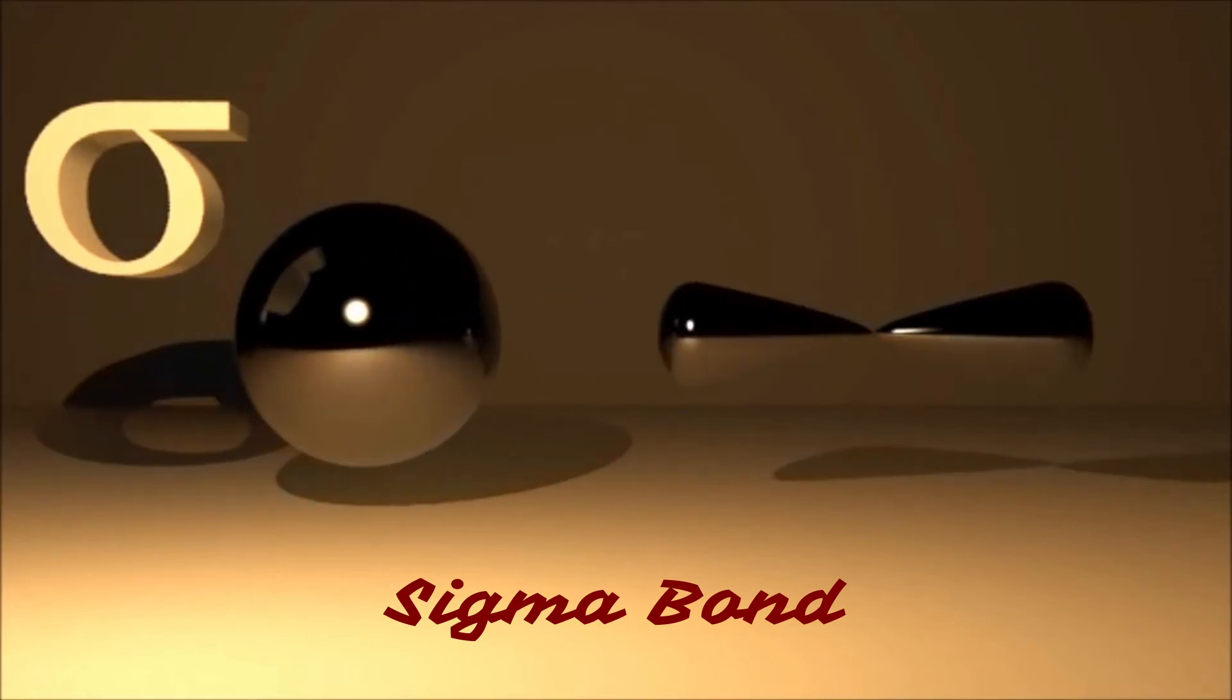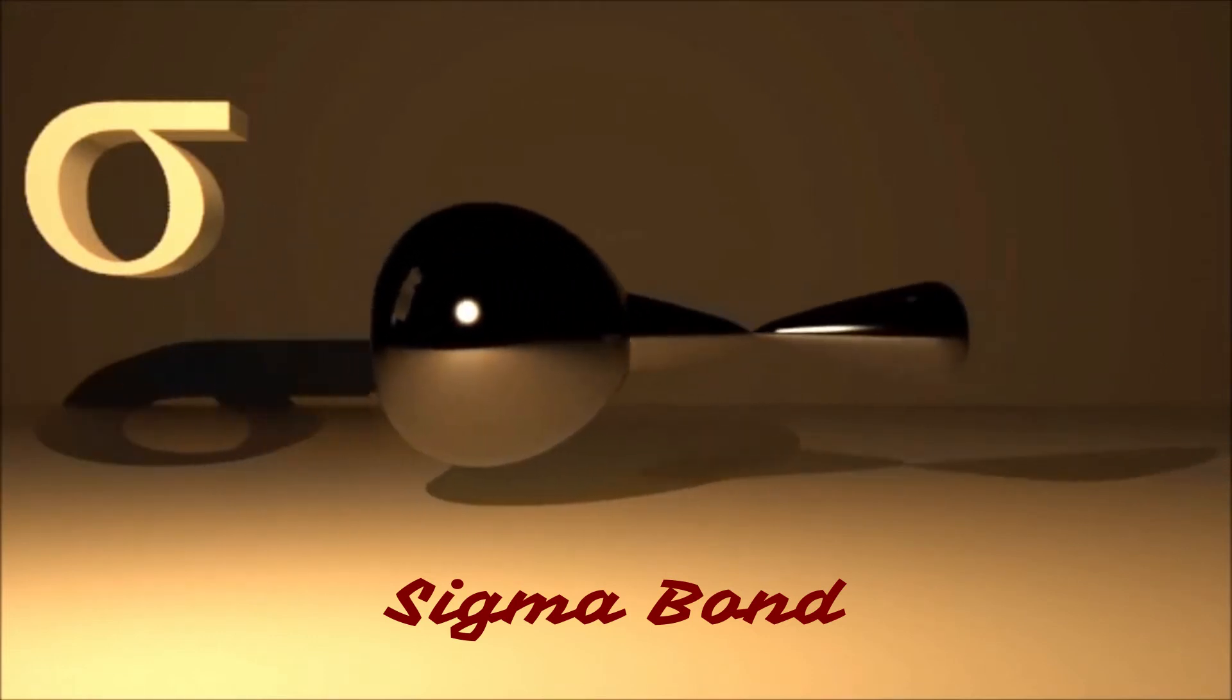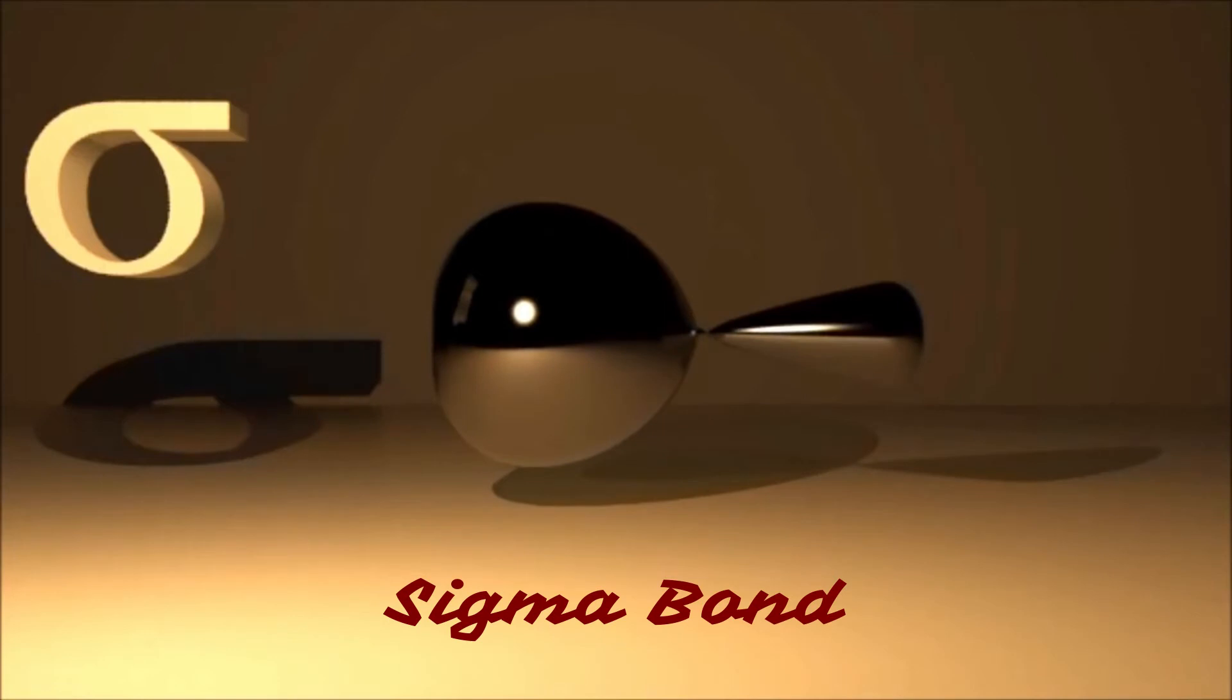Now, for hydrogen fluoride HF, the s and the p orbitals for the H and the F respectively again form a sigma bond, single covalent bond. That goes along the internuclear axis.